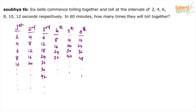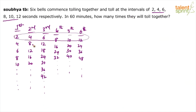Remember, this is a question based on LCM. You have to find the least common multiple of all the given values. We are looking at common multiples of 2, 4, 6, 8, 10 and 12. Find the least common multiple of 2, 4, 6, 8, 10 and 12.